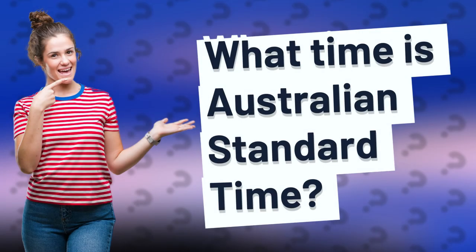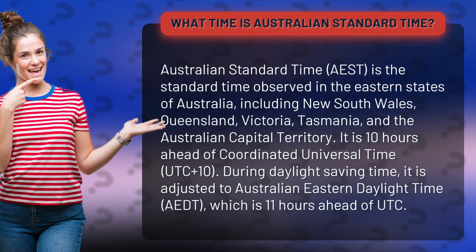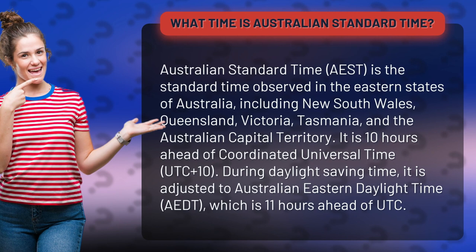What time is Australian Standard Time? Australian Standard Time, AEST, is the standard time observed in the eastern states of Australia, including New South Wales, Queensland, Victoria, Tasmania, and the Australian Capital Territory.